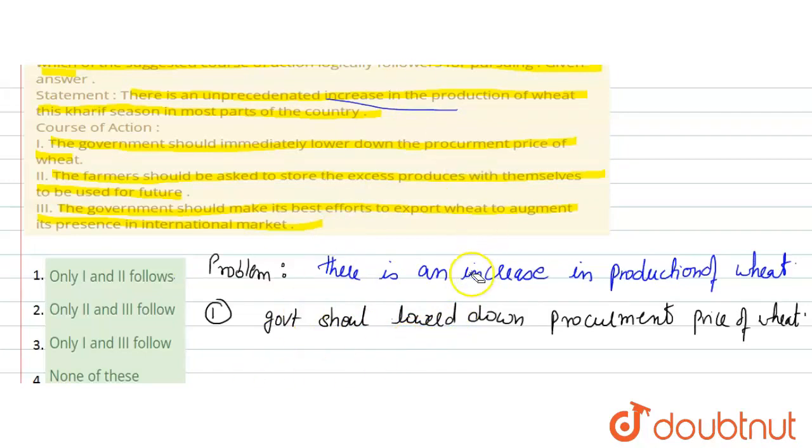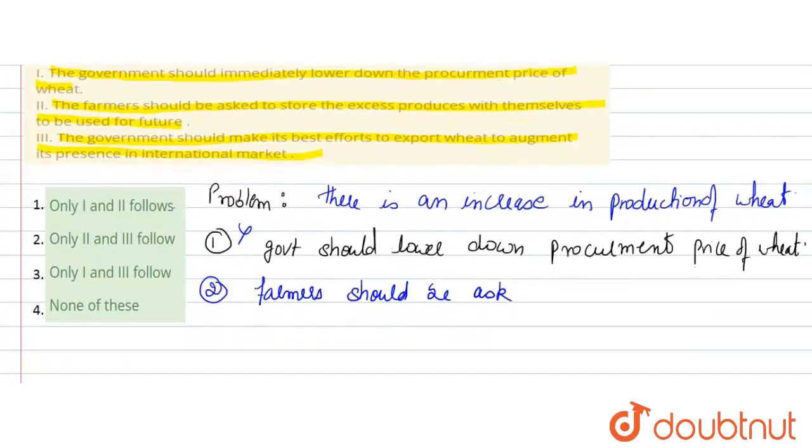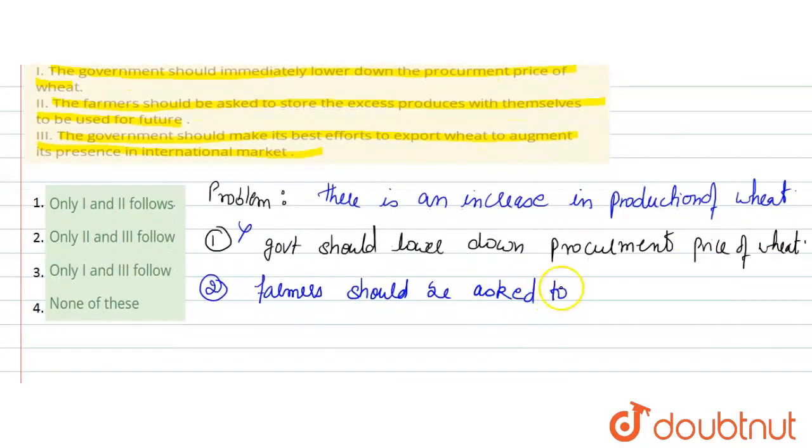Then next, the course of action says farmers should be advised. Farmers should be asked to store for future use. They should be told to store the excess wheat for future use. Is this feasible? Any farmer grows crops for maximum profit, so this is not economically feasible. So this is also wrong.